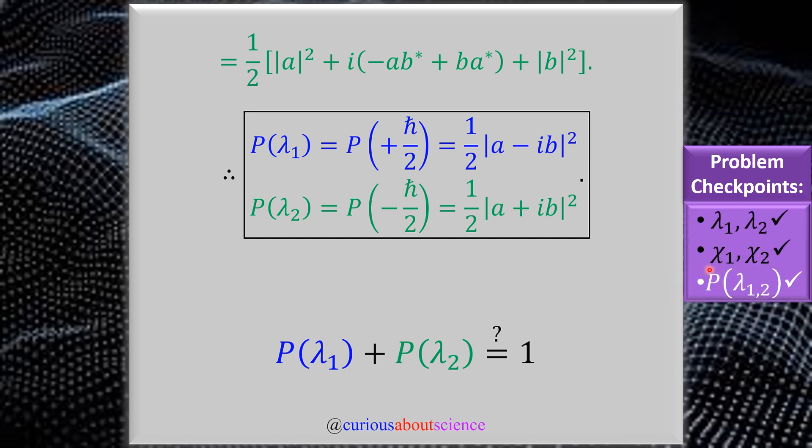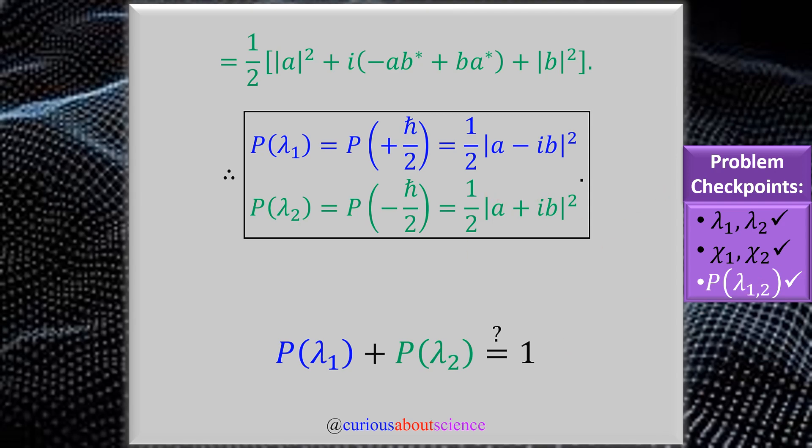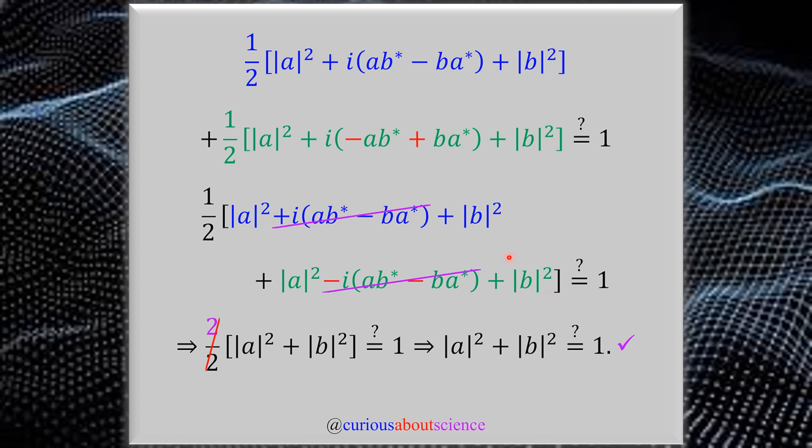We got all that fun stuff done. Probabilities is checked off. Let's dive into verifying. Here, just add them together. Let's see if they actually equal 1. We see both of them have a 1/2 term, so we can factor that out. It might behoove us to highlight the fact that this is a negative and this is a positive on the green terms because we have an AB star, an AB star, minus BA star, and then a plus BA star.